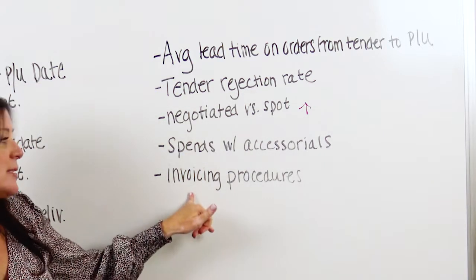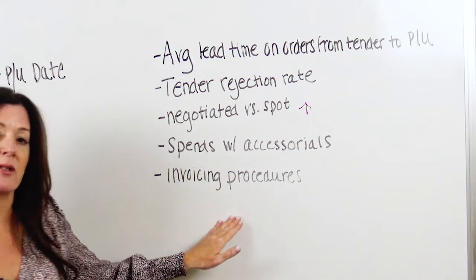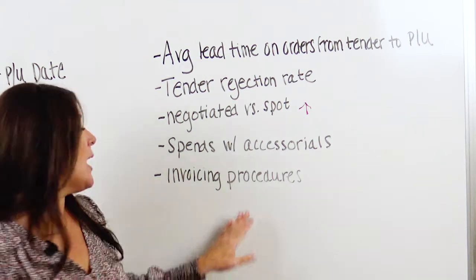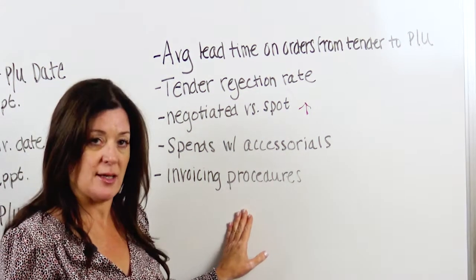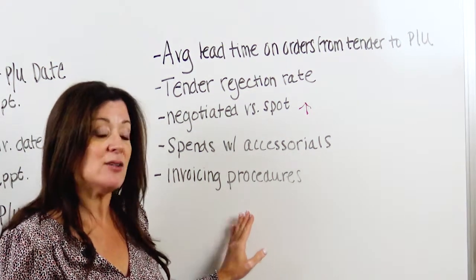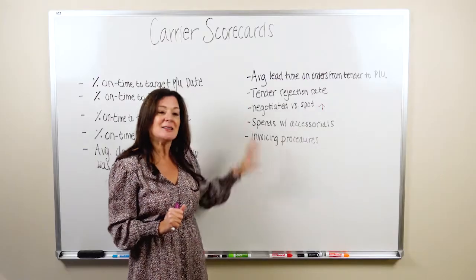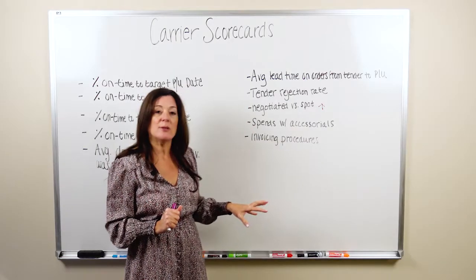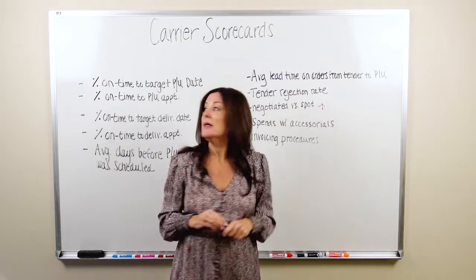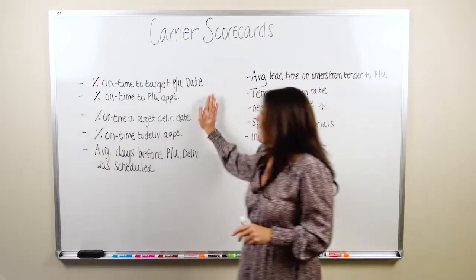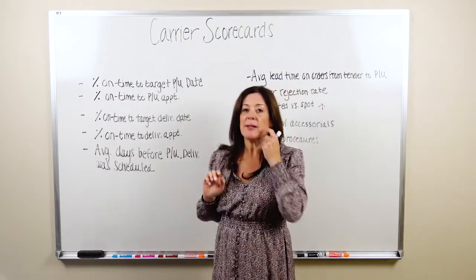The other metric is your overall spend with your carriers and the breakout of the accessorials. And people often miss this one: your invoicing procedures. How is the carrier performing on invoicing? That matters — it's important. So let's deep dive a couple of these because it can get confusing, especially when we start talking about the shipment.